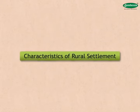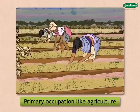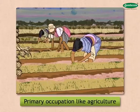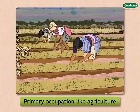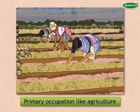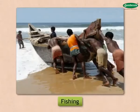What are the characteristics of rural settlements? The population density is low. The majority of the people are engaged in primary occupations like agriculture, collecting forest products, fishing, etc.